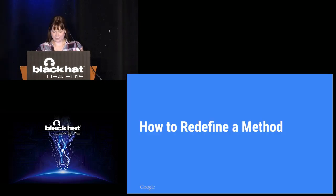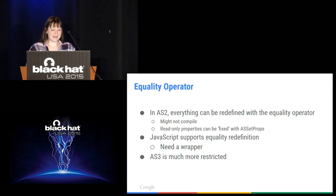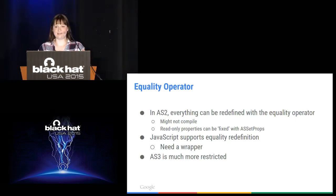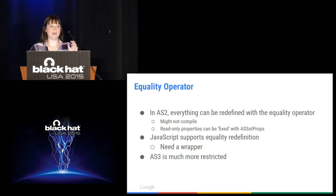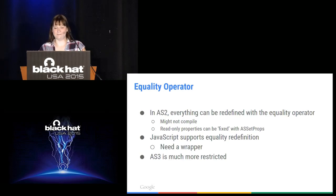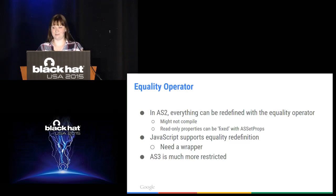So how do you actually redefine a method? The most simple way is using the equality operator. This is easiest in ActionScript 2, where everything can be redefined as everything — though there's no guarantee it will compile, sometimes you have to write the bytecode by hand, and sometimes read-only properties require fixing using ASSetProps. JavaScript is basically the same — anything can be redefined as anything, with one exception: if you try to redefine one native method as another native method, it won't work, so you need to put a wrapper around the second native method. ActionScript 3 is much more restricted: classes need the dynamic keyword for functions to be redefined with equality, but there are a lot of other ways to redefine stuff in AS3.